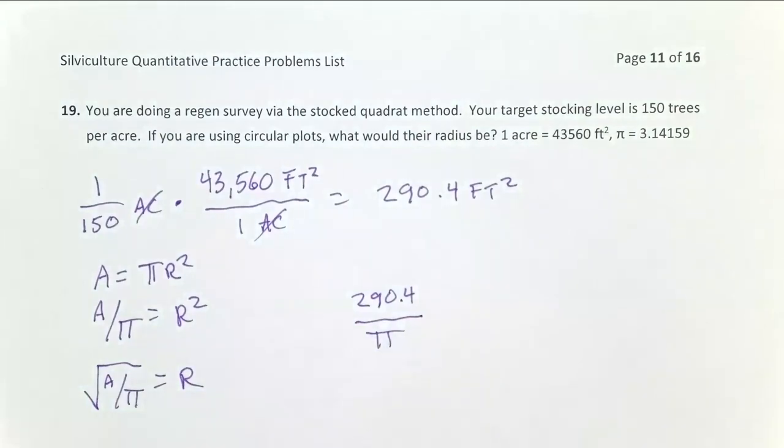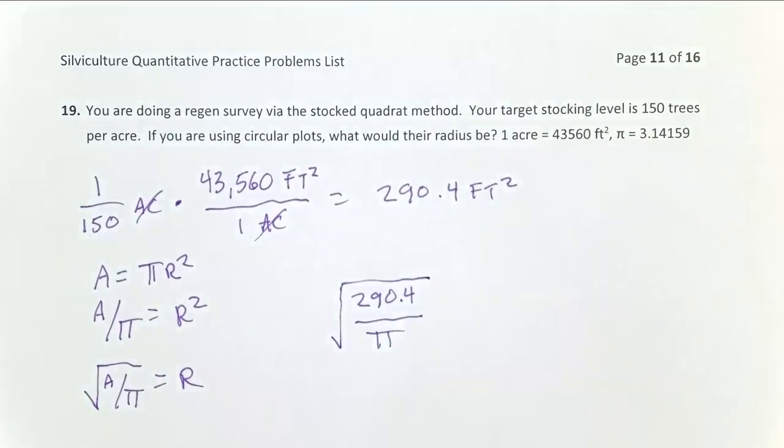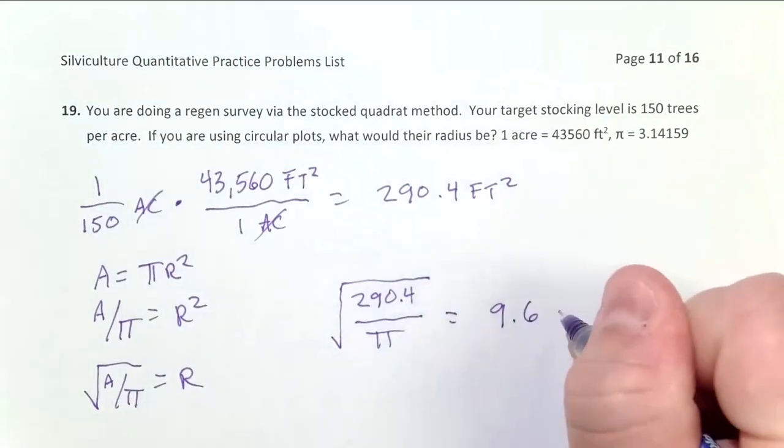I get that number in my calculator. Then I take the square root of that number in my calculator. And if I do that order of operations correctly, the radius of these 150th acre plots will be 9.6 feet.